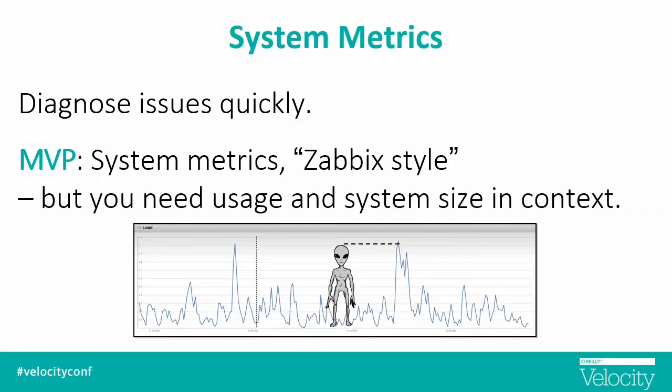The third thing you want is system metrics. The first two are going to give you some information about whether there's a problem, but then you want to start getting information that's going to help you root cause the problems. If you're in the cloud and you're using infrastructure as a service, it's pretty easy to get them. If you're using platform or software as a service, you're dependent on what the provider is surfacing to you via APIs. The real trick here is that these stats are really not useful unless you have both your current load on your system — traffic, if it's a website — and your current system size and context. So, if you're in the cloud and you're scaling your tier up and down, saying that my CPU is at 80% is not all that useful. You want to know if you're also at peak traffic and if you've already scaled up to 10 web servers.